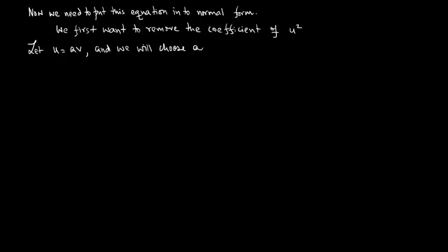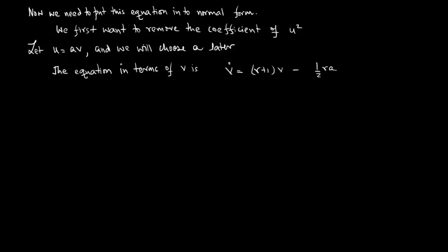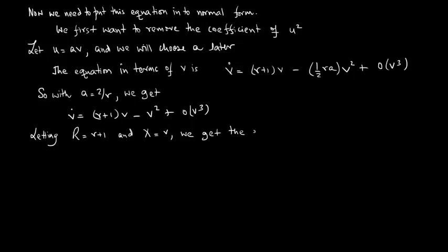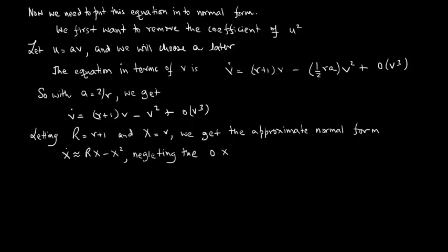Let u = av; we will choose a later. The equation in terms of v is v̊ = (r + 1)v - (ar/2)v² + O(v³). With a = 2/r, we get v̊ = (r + 1)v - v² + O(v³). Letting R = r + 1 and X = v, we obtain the approximate normal form X̊ = RX - X², neglecting O(X³) terms.